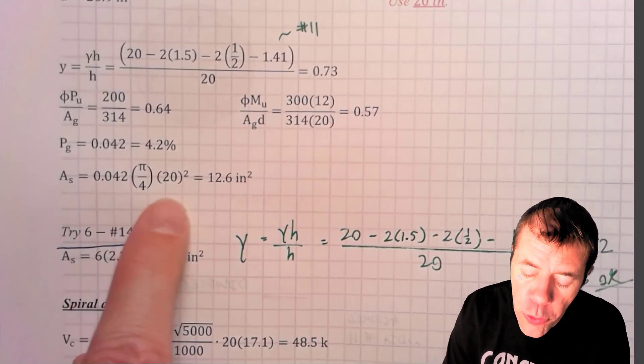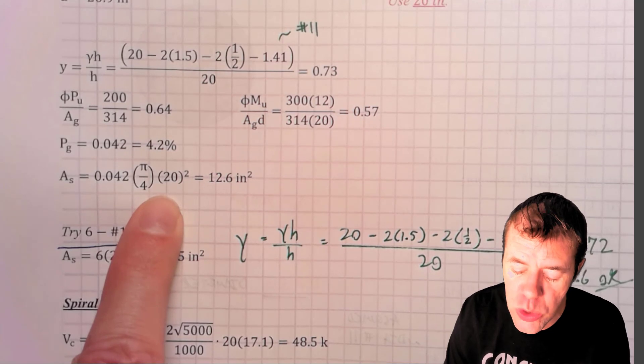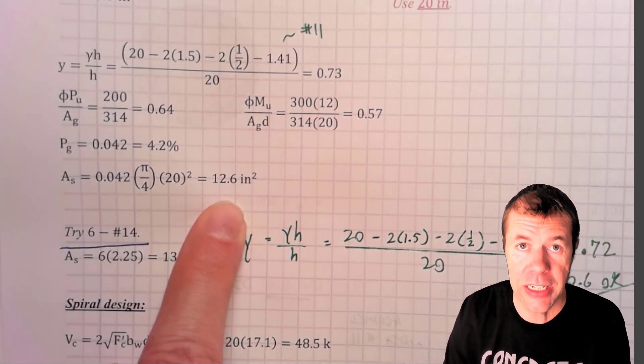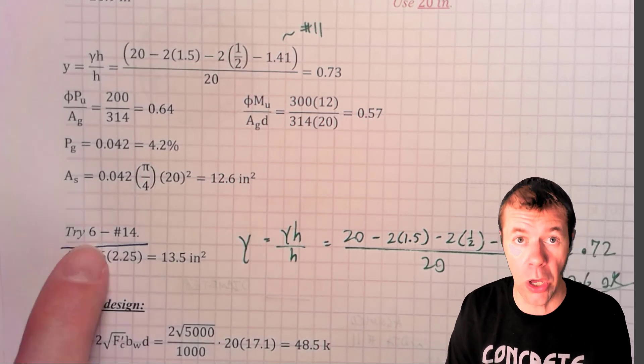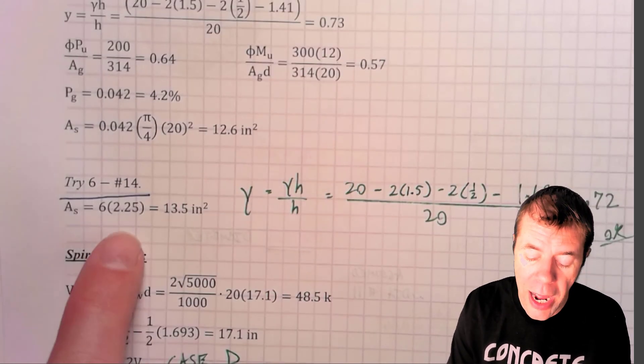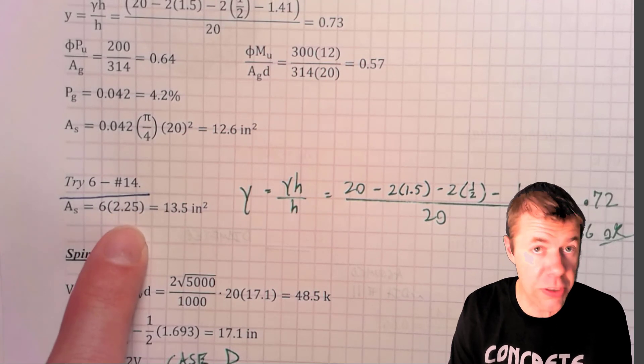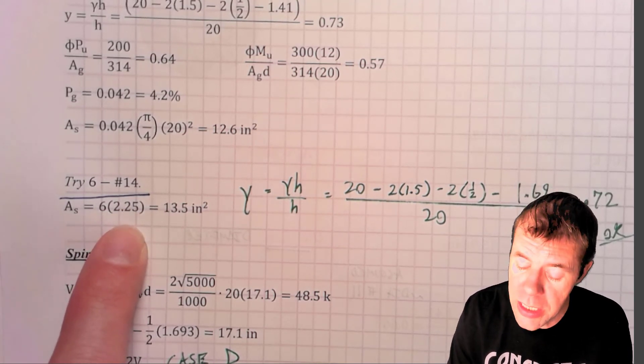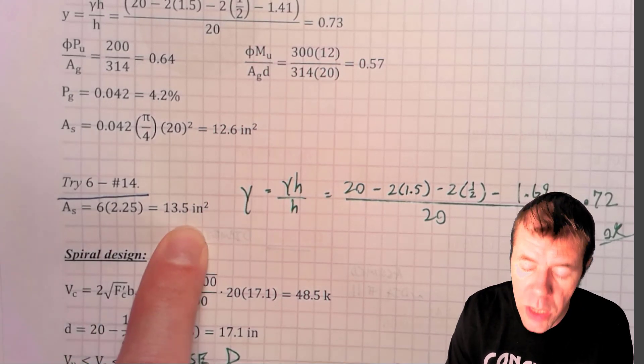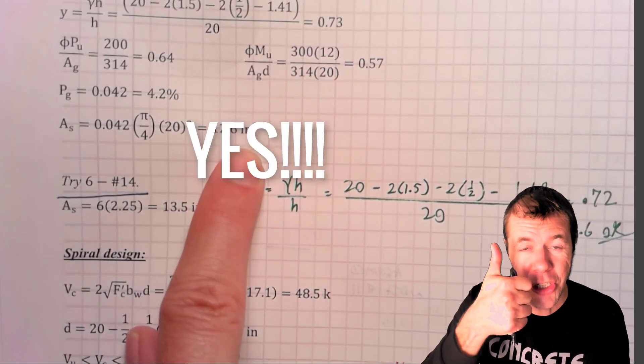4.2%, that multiplied by the area of my column gives me 12.6 inches squared. Now, I've got to figure out what bars I want to use. I want to use 6. And using 6 bars would mean that I would need number 14. So, I wouldn't have to use 6. I could use something else if I needed to, but I just wanted to use 6. So, I did. That's 13.5 inches squared, which is larger than 12.6. Cha-ching! That's good.